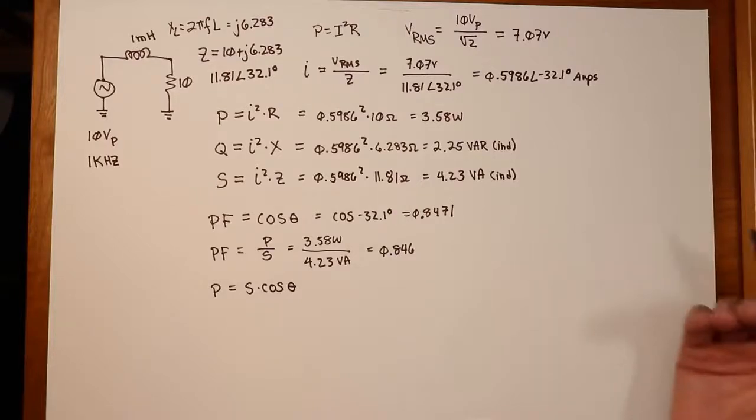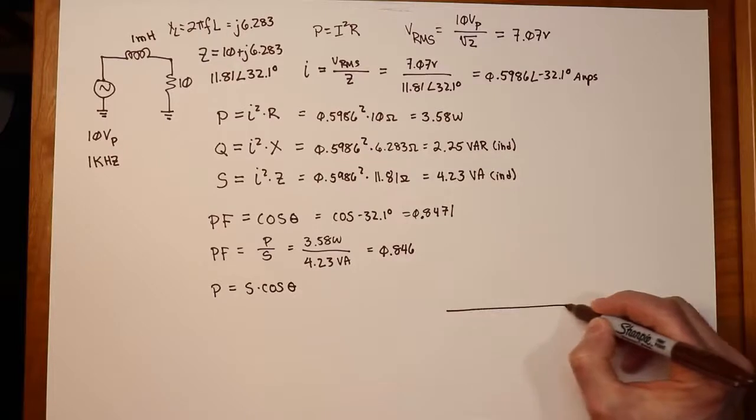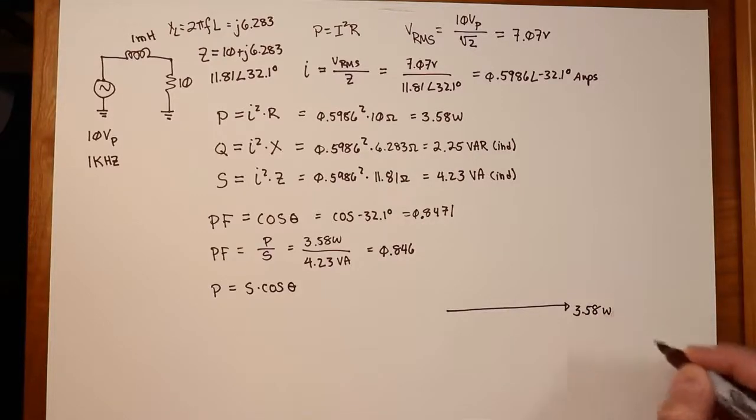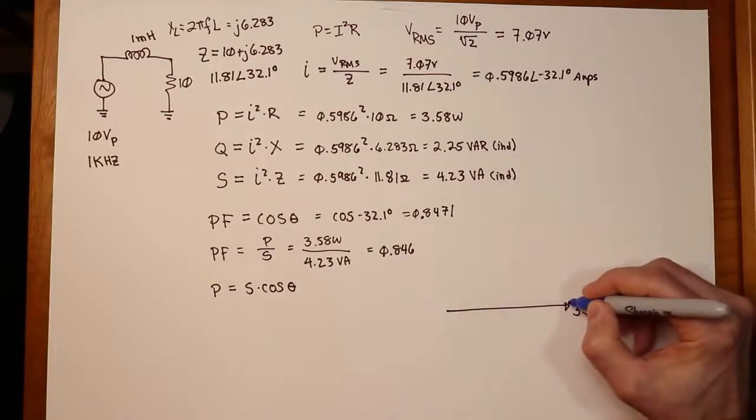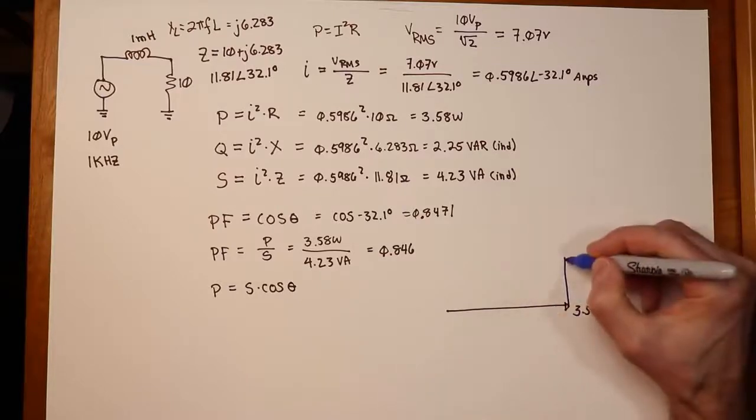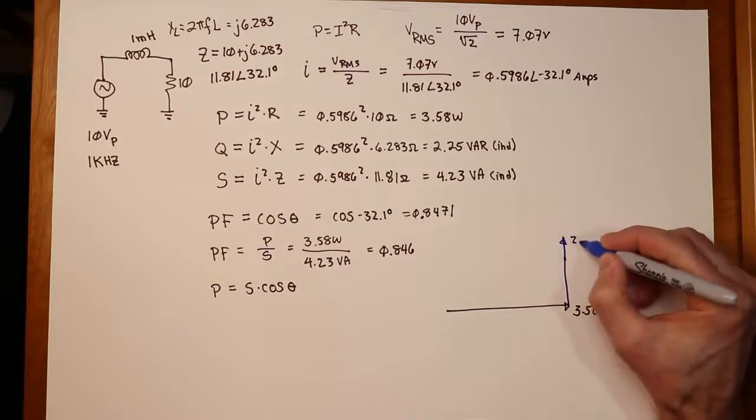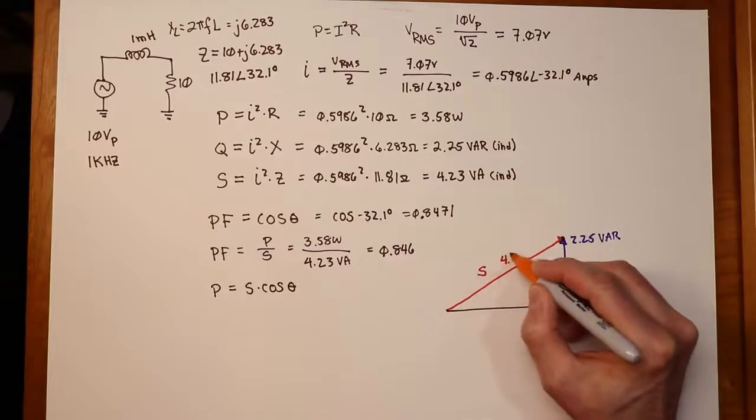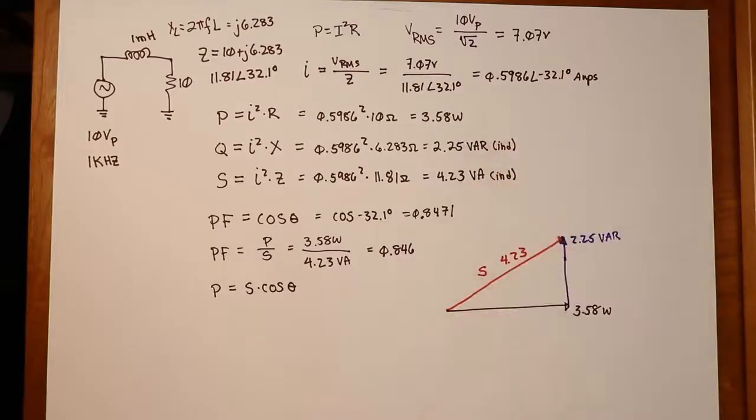All right. Okay, continuing. We said we want to look at the power triangle. So what does this wind up looking like? Well, we are going to have on the real end 3.58 watts. So that's true power, again, watts. And then we have, on the inductive side, 2 1/4. So we're going to draw that going up like this. If that's 3 1/2, 2 1/4 is going to be somewhere around here. Eyeball that. VAR inductive, and then S is this vector right here. Okay, so this is S, has a magnitude of 4.23, and the angle here would be 32.1 degrees. And there's your power triangle.